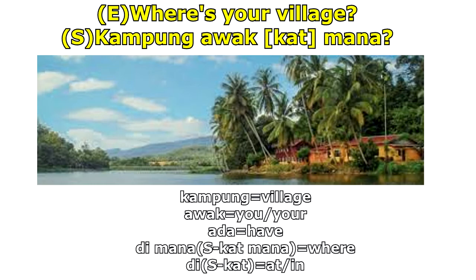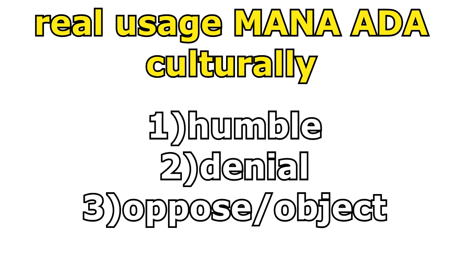Now we're really going to go through the real topic: "mana ada." There are three situations where you can use this phrase. The first one is when you're being humble. The second one is denial. And the third one is when you want to oppose or object. So the first one — being humble. I'll give you some examples.